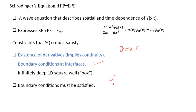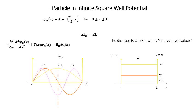The boundary conditions are psi n of x equal to zero at the interface. The wave function should be continuous in both regions. We can write the wave function as psi of x equal to A sine of (n pi / l) times x, where x is between zero and l. This is our wave function, which we can plot in the potential well.